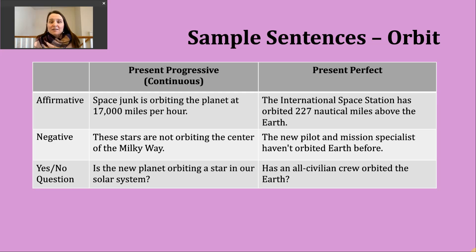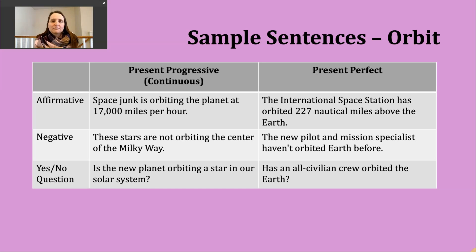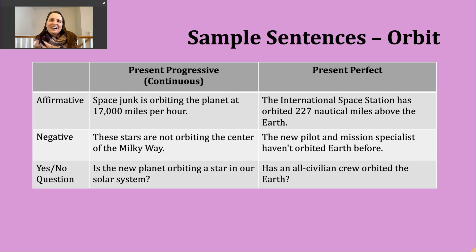This describes something that's happening right now — we might not think about it, but it is certainly occurring. For a negative present progressive sentence, insert not after the be verb, then use the -ing form. Example: these stars are not orbiting the center of the Milky Way. Here, maybe an astronomer is pointing out a particular cluster of stars and describing where they are in relation to the Milky Way.